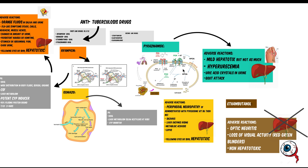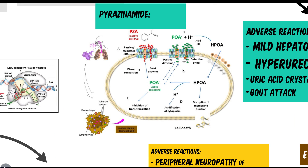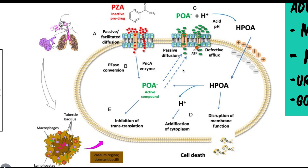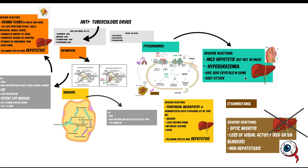Pyrazinamide is also an antituberculosis drug. Its mechanism is not clearly understood, but pyrazinamide is a prodrug that becomes active once it gets inside the tubercle of the lung — a granulomatous tubercle. Once active, it causes a flow of H+ ions that accumulates within the cell, causing acidification of the cytoplasm and plasma, leading to membrane disruption and cell death.